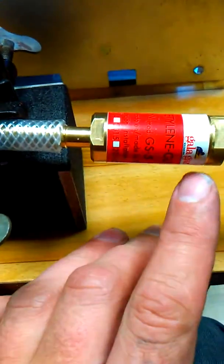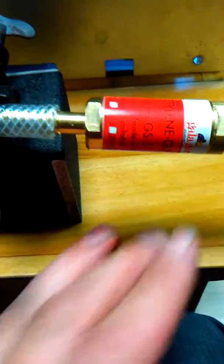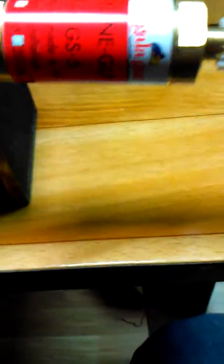Here is a wall which prevents flashback, a flashback arrestor used for acetylene.